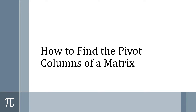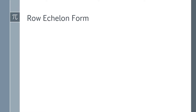In this video, I'm going to show you how you can simply and easily find the pivot columns of a matrix. To do this, you first need to understand row echelon form — that is the key to finding pivots. There are two rules that you need to be aware of.